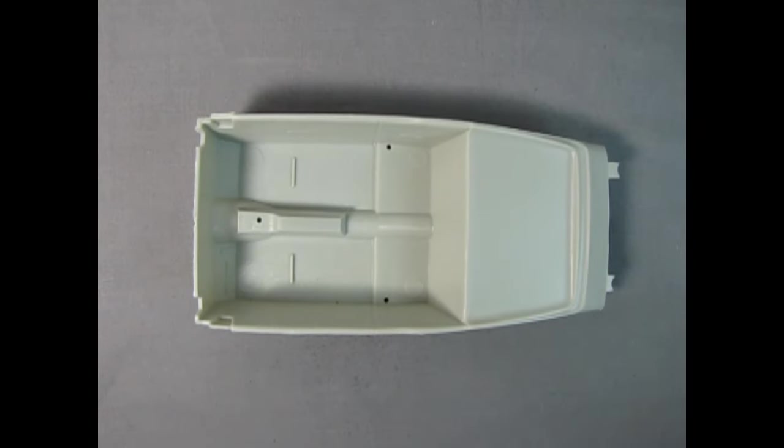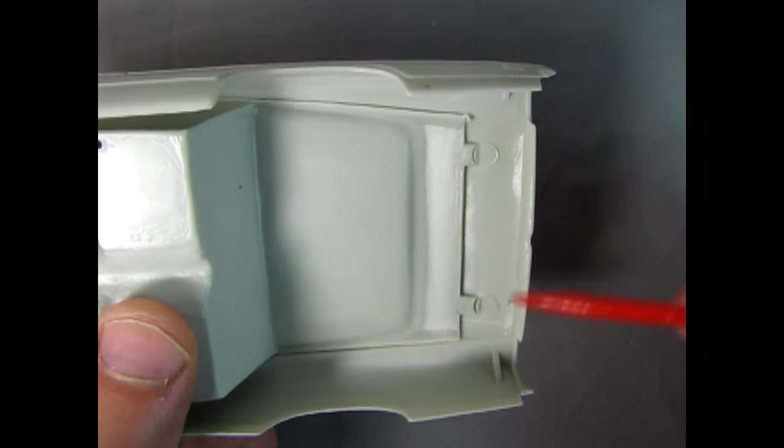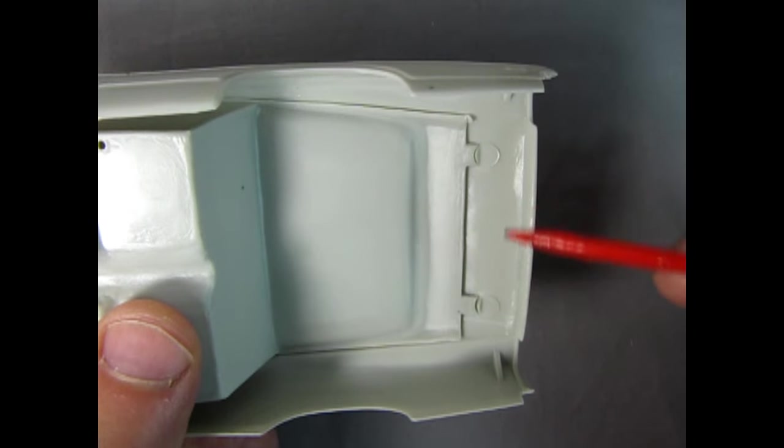Next, we have the interior tub and you will notice these two little half-moon tabs at the back. The driver's side tab is short and the passenger's side is long. They push into these two mold marks on the inside of the body.